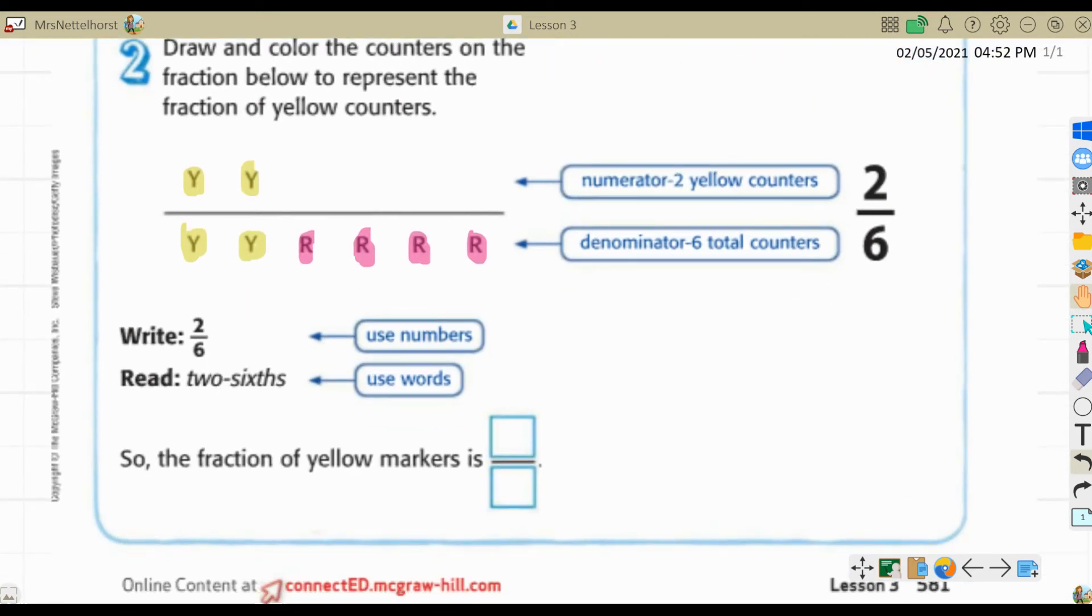So two-sixths of the markers are yellow. We write two-sixths in numbers, and we read it as two-sixths in words. So the fraction of yellow markers is two-sixths.